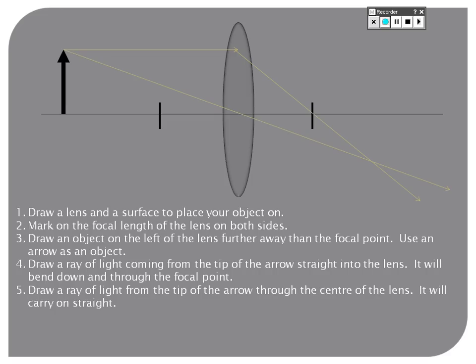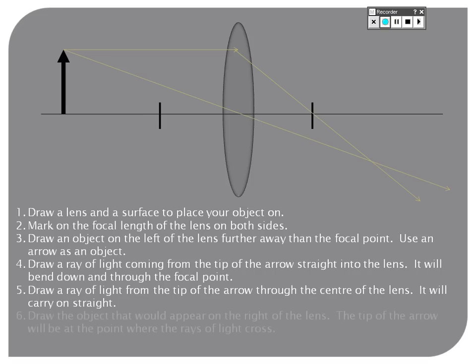And if you know on the left hand side, the rays of light are together at the point of the object. On the right hand side, the points where the lines cross, that is going to be where the object is going to be formed.